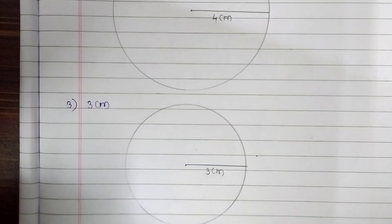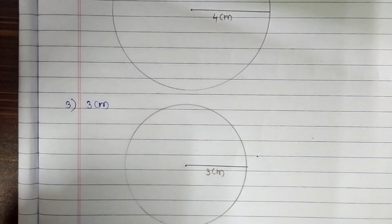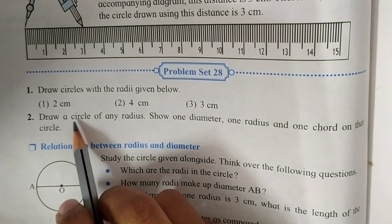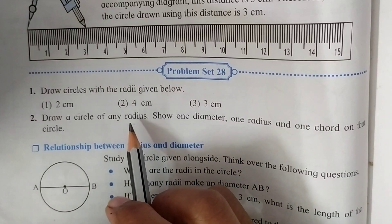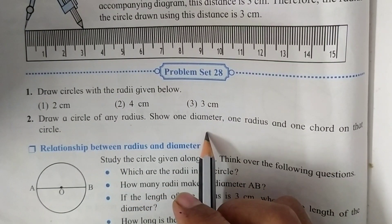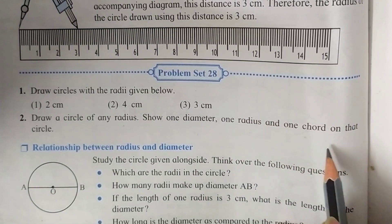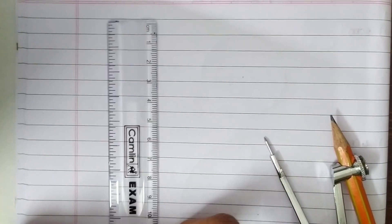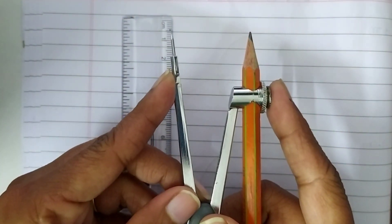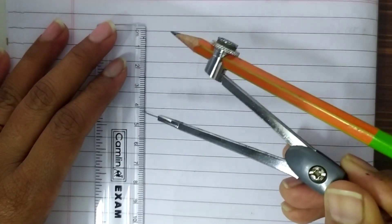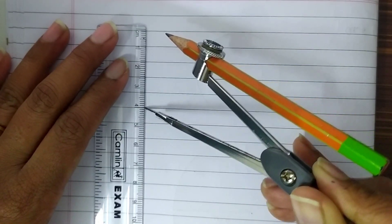The first question is complete now. Now for the second question, they ask us to draw a circle of any radius — we can choose a distance at our own choice — and show one diameter, one radius, and one chord on that circle. So for the second question, I am going to take a distance of 4 centimeters. You can take a distance at your own choice. I am going to take 4 centimeters distance.